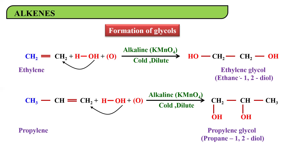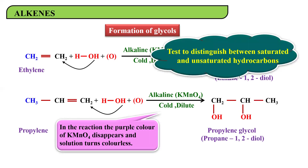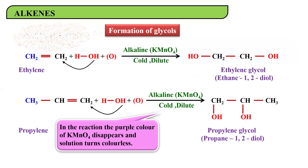Now why is this used as a distinguishing test? The color of KMnO₄ solution is purple/pink. As KMnO₄ is consumed in the reaction, the purple color slowly starts to disappear. If you put KMnO₄ into a compound and the color disappears, you can say the compound was unsaturated. Therefore, this KMnO₄ reaction can be used for distinguishing between a saturated and an unsaturated hydrocarbon — and this same test is referred to as Baeyer's test.